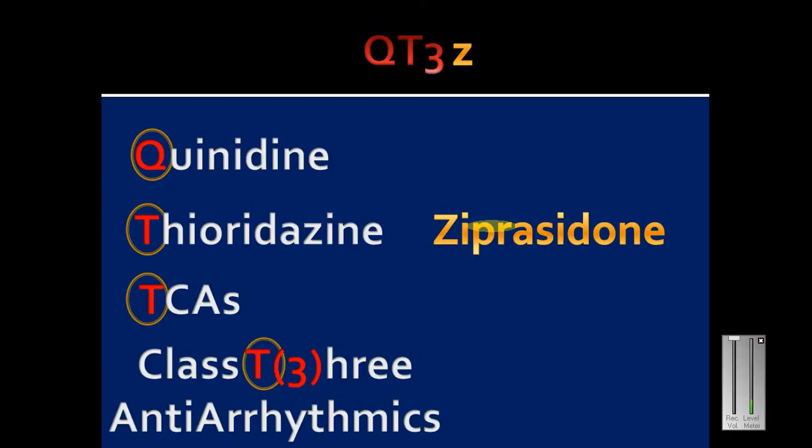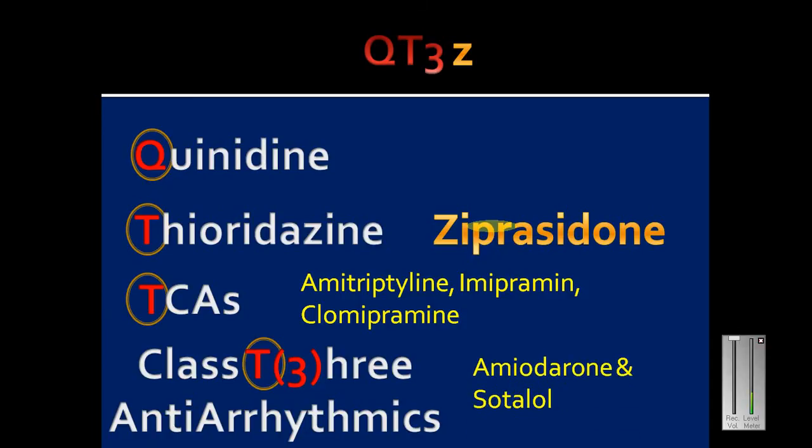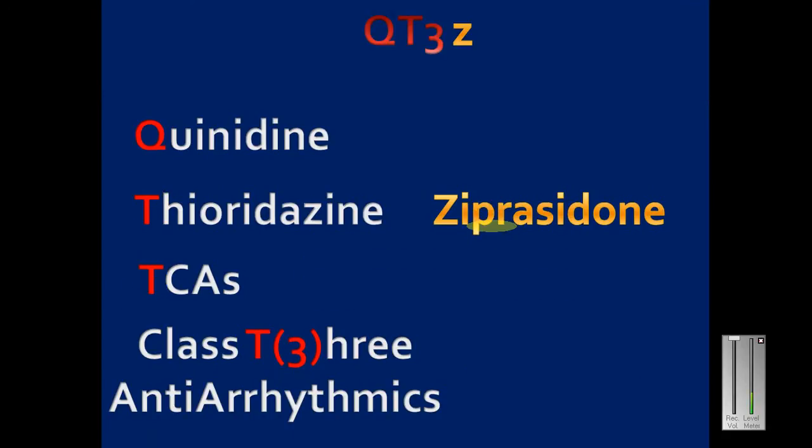So drugs increasing QT interval: QT3z. That's quinidine, thioridazine, TCAs, class three antiarrhythmics, and ziprasidone. Examples: TCAs amitriptyline, imipramine, clomipramine, and amiodarone and sotalol are class three antiarrhythmics.